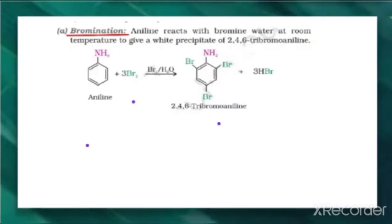The product formed here is 2,4,6-tribromoaniline because the Br is on the 2nd, 4th, and 6th positions of the NH2 group. So the product formed is giving a white precipitate of this compound.